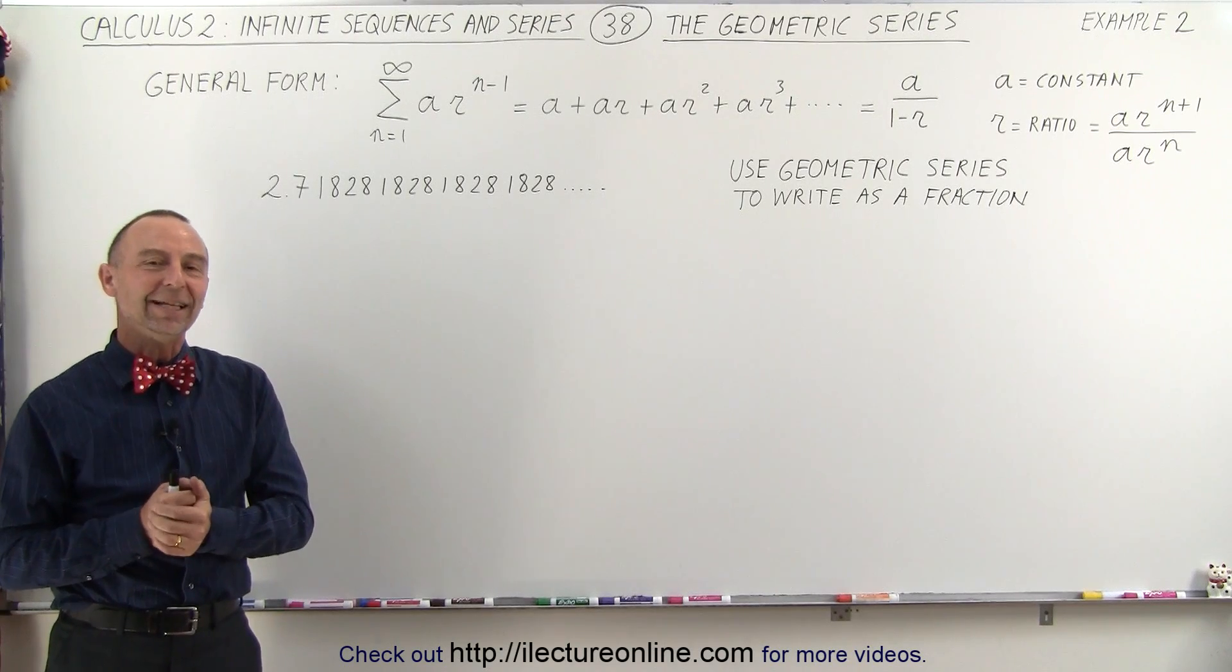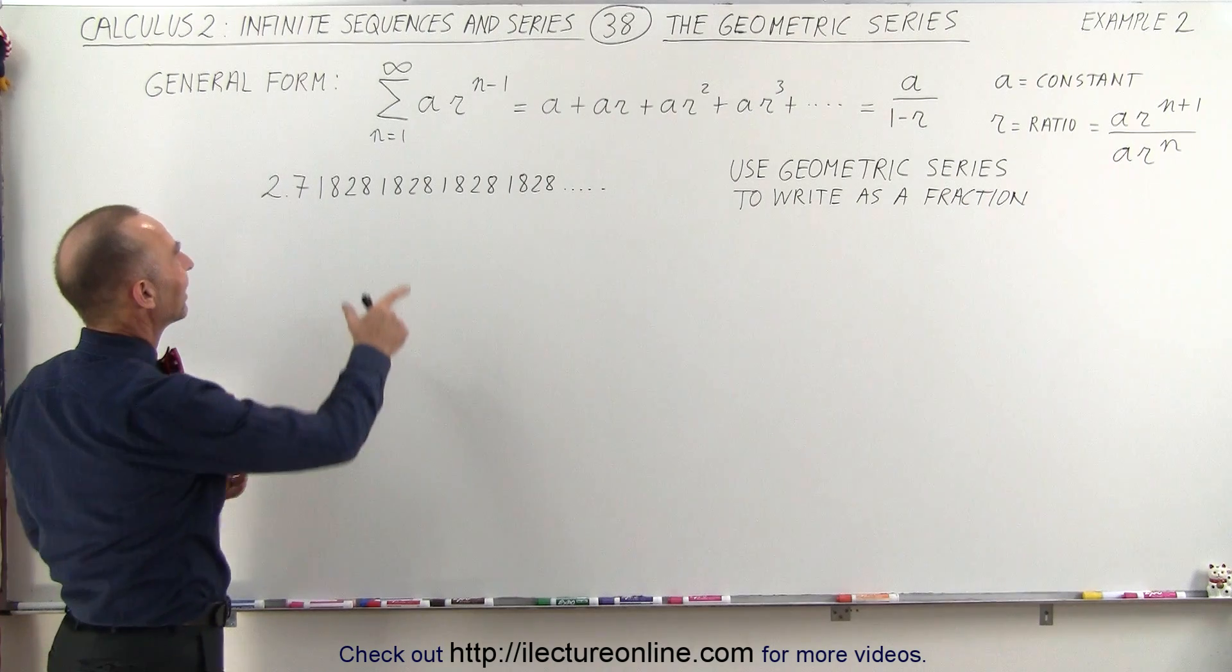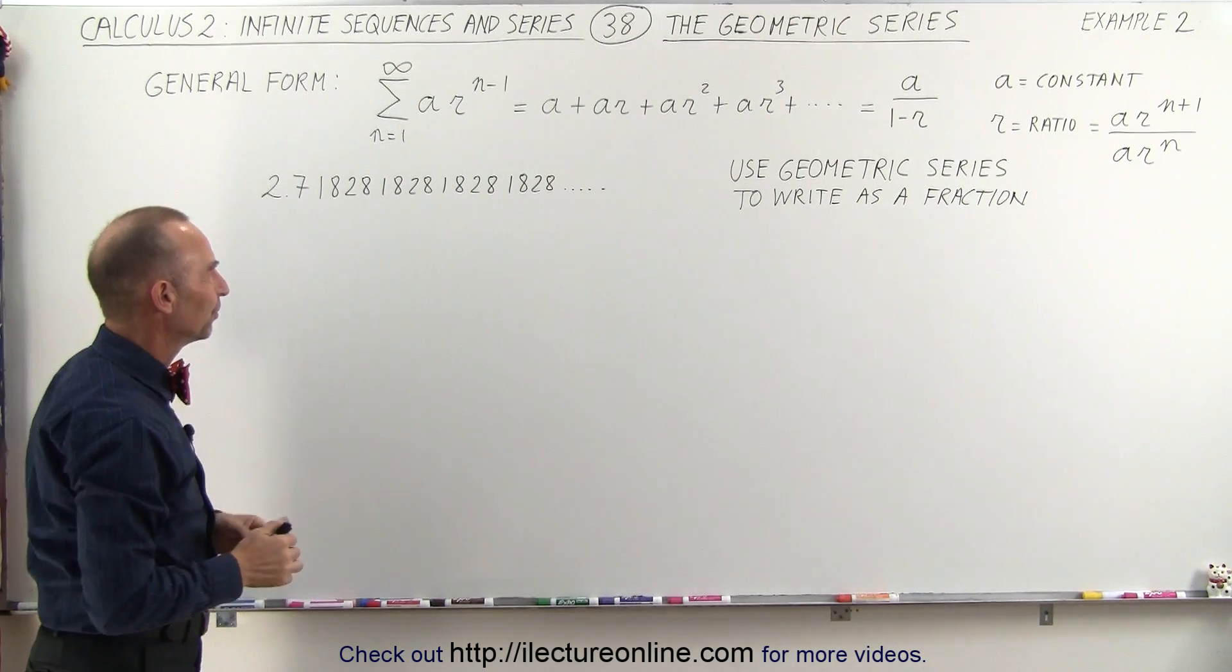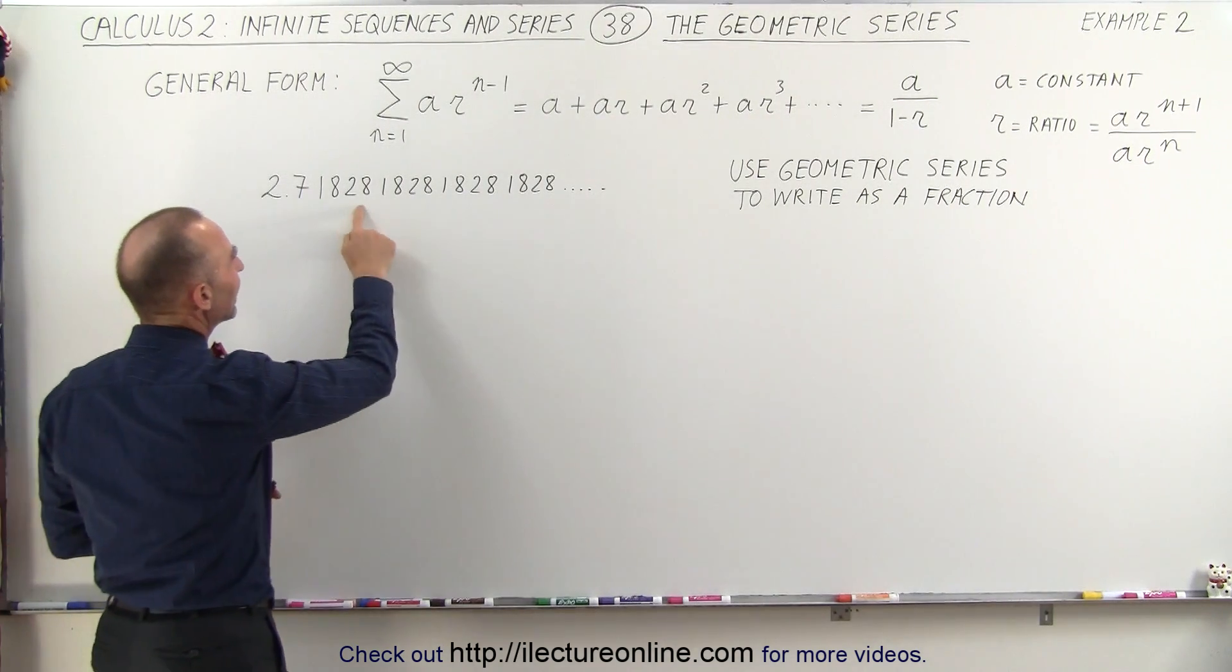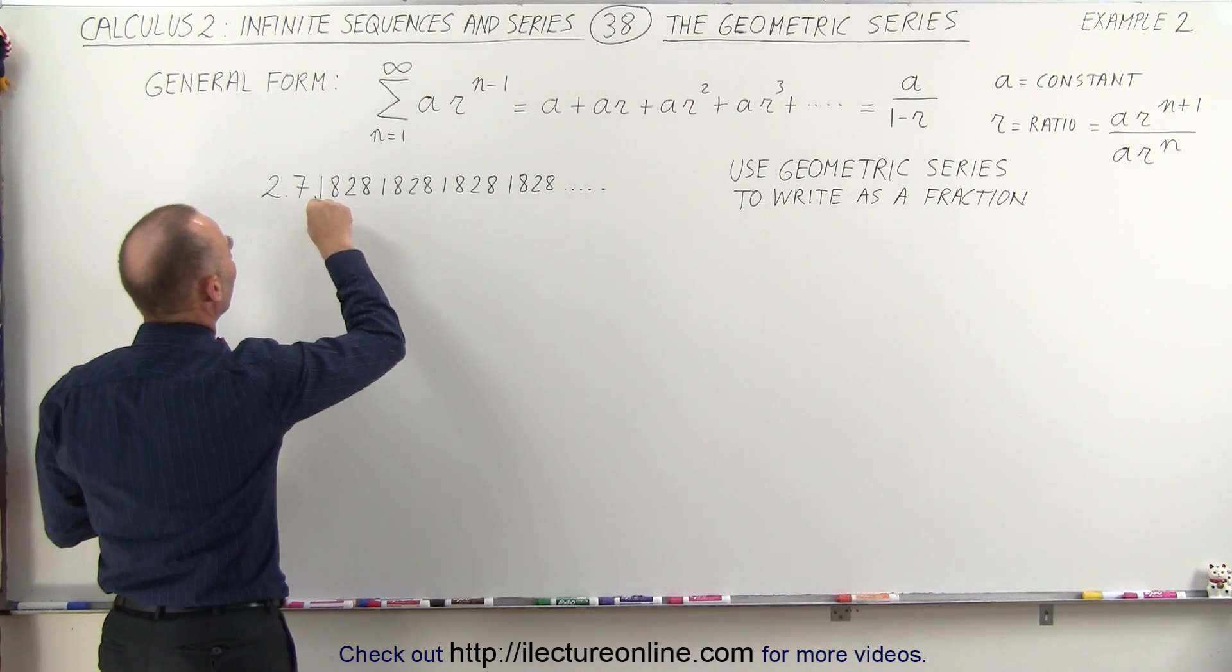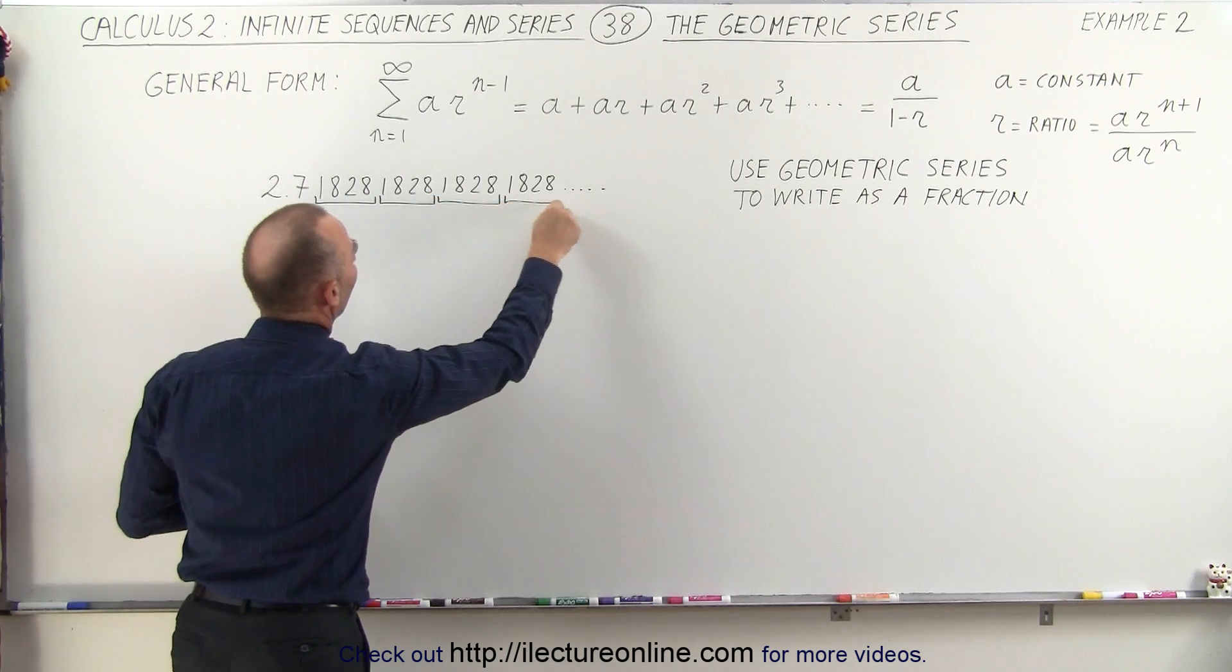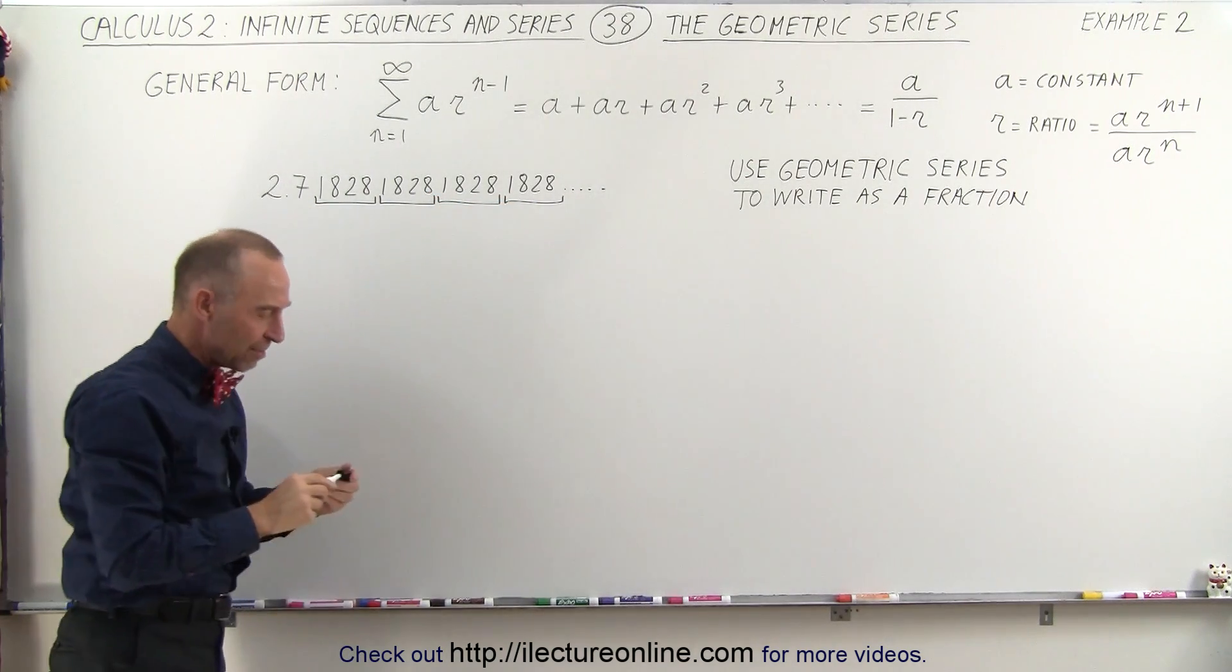Welcome to ElectronLine. Now let's use the concept of geometric series to write this number as a fraction. You can see it's a repeating number here. We have the number 1828, and that portion of the decimal keeps on repeating forever. So how do we write this as a fraction?